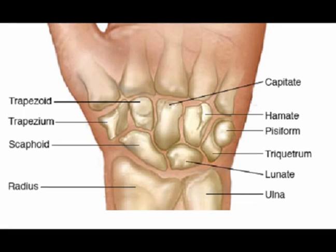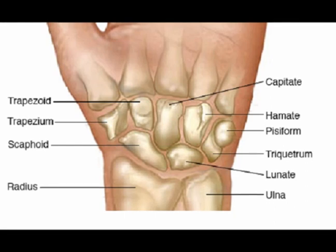The proximal row, going from radial to ulnar, includes the scaphoid, the lunate, the triquetrum, and the pisiform.